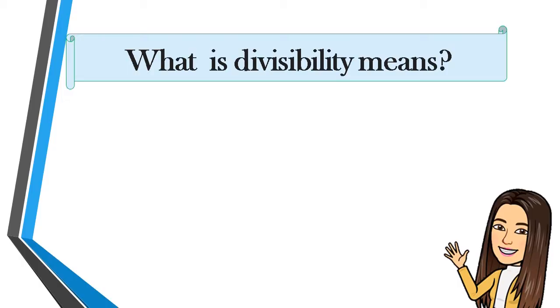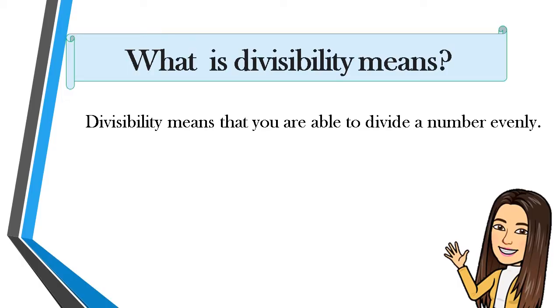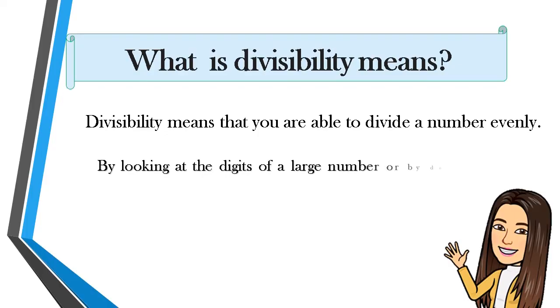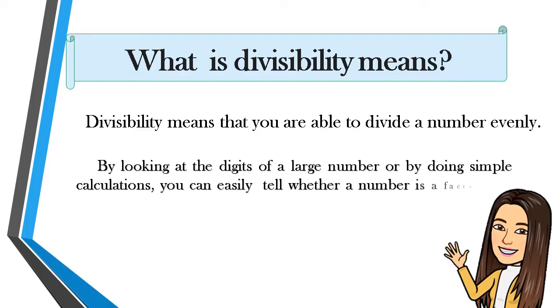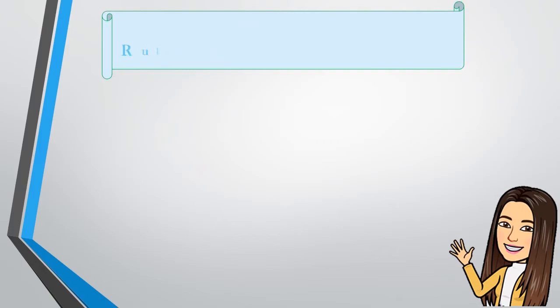Divisibility means that you are able to divide a number evenly. By looking at the digits of a large number or by doing simple calculations, you can easily tell whether a number is a factor or a multiple of another number. Let's have these rules.